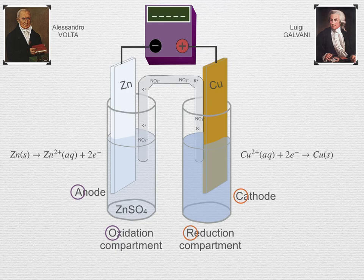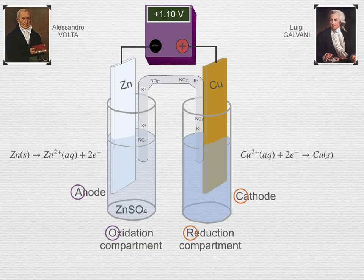So with the salt bridge in place, the circuit is complete, and the voltmeter now reads the potential difference between the two cells. In this case, with zinc and copper electrodes and solutions with one molar concentration, the measured cell potential is a positive 1.10 volts.